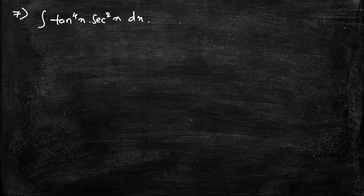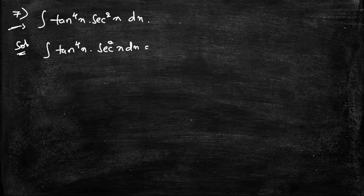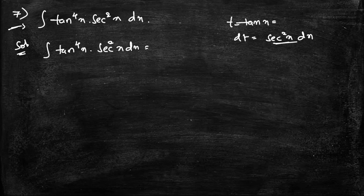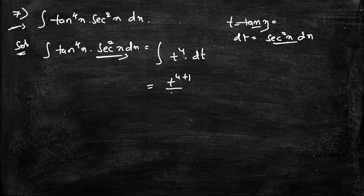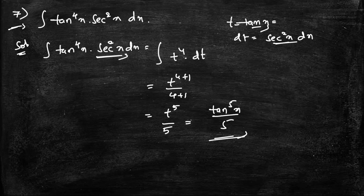Seventh question: integral of tan⁴x · sec²x dx. Let t = tanx, so dt = sec²x dx. The integral becomes ∫t⁴ dt = t⁵/5 + c. Substituting back, the answer is tan⁵x/5 + c.